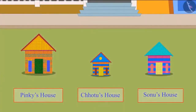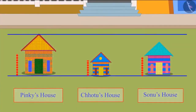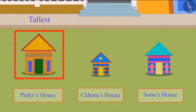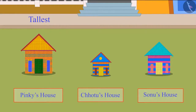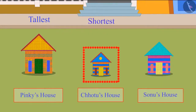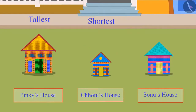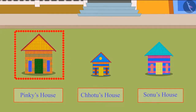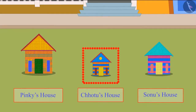So children, can you tell me who has made the tallest block house? You are right children — Pinky's block house is the tallest among these three houses. Can you tell me whose block house is the shortest of all? Yes, Chotu's block house is the shortest. So out of these three houses, Pinky's house is the tallest and Chotu's house is the shortest.